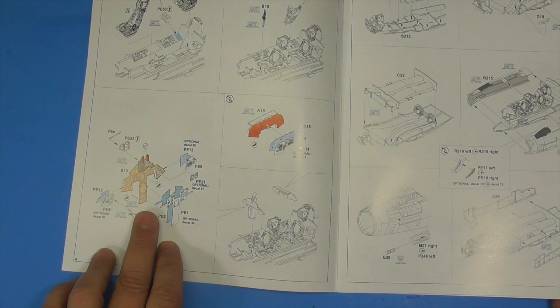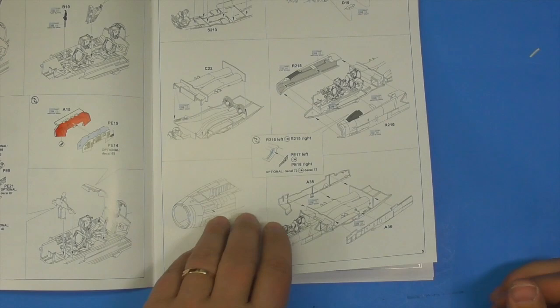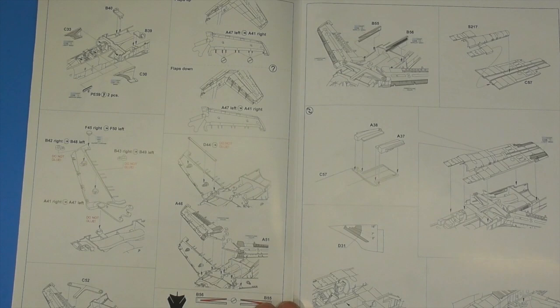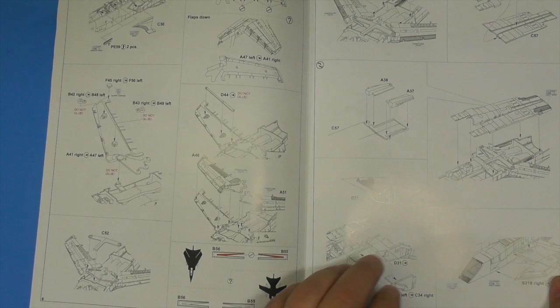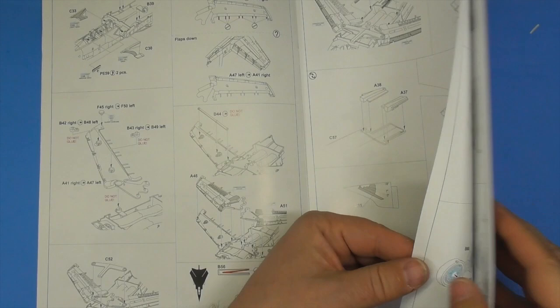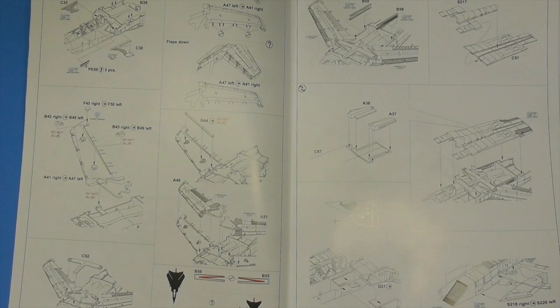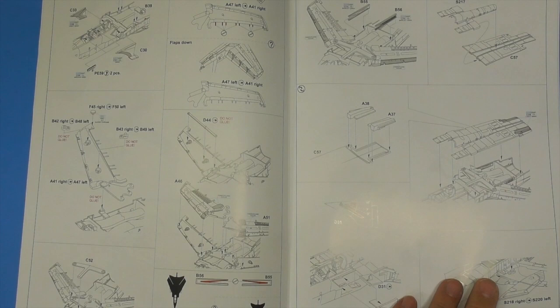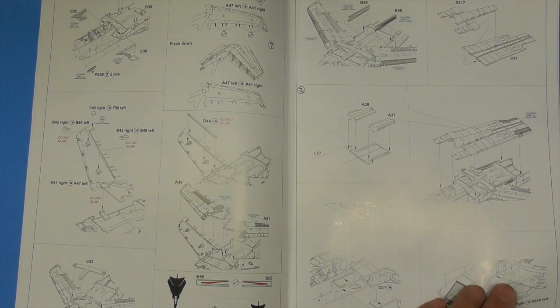And then of course there's your color callouts with your Mission Model color and your Mr. Hobby Aqueous callouts. Seats going in, again some more PE parts, some more removing parts for instrument panels. Now you have an option because there are decals. That's why this isn't red, because you can use decals if you want or you can use photo etch. Putting the fuselage together, putting in the gun, sides of the fuselage. Getting your wings together, your intakes. This is telling you the different parts to use and how to cut if you're going to have the wings closed or open. Do not glue. Several do not glue things.